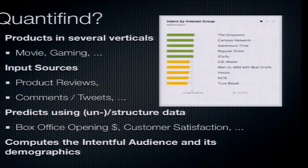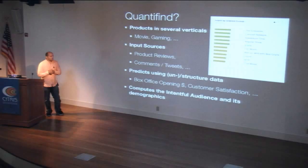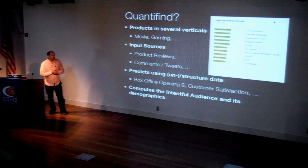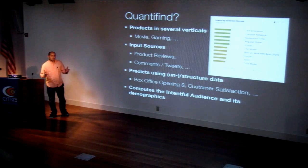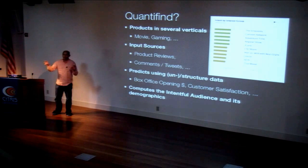So what does Quantifind do? I can't show the demo right now, but I'm more than happy to show people the actual product afterwards. We have products for several different verticals — for example, the entertainment industry in Hollywood, or video game producers. What we essentially do is we try to get as much publicly available unstructured and structured information — for example, tweets, comments on blog posts about products, product reviews on Amazon. We slurp in essentially a few years' worth of data. For movies, we'd look at the last four years' worth of publicly available comments, and build a model that tells us how a comment relates to a structured field or KPI that we care about.